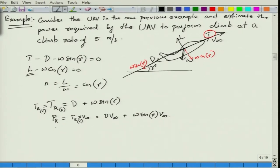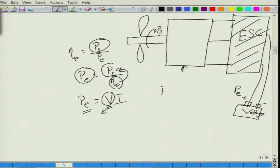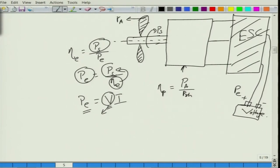The shaft power that the engine needs to generate depends on propulsive efficiency η_p, which equals power available divided by shaft power. With the propeller, we convert available shaft power from the brushless motor or engine into the available power that moves the aircraft forward. The output from the propeller-motor combination is power available, and shaft power equals power available divided by propulsive efficiency η_p — this is what we ultimately need to figure out.